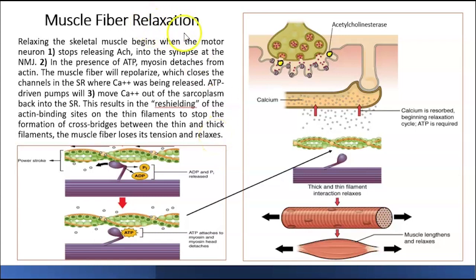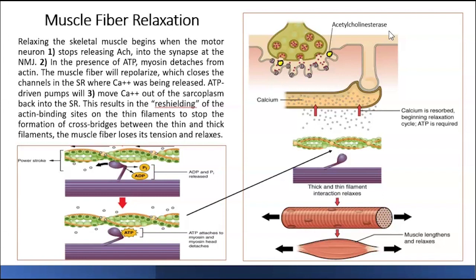We finished with contraction, now we're going to start with relaxation. How many steps do we need in order to get relaxation? Acetylcholine gets released. You reabsorb the acetylcholine back into the nerve. In addition to that, in the synaptic cleft there is an enzyme called acetylcholinesterase. This enzyme is going to destroy the acetylcholine. So if there is no acetylcholine, then there's no more contraction.